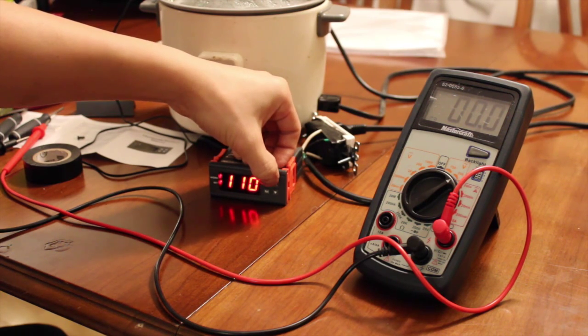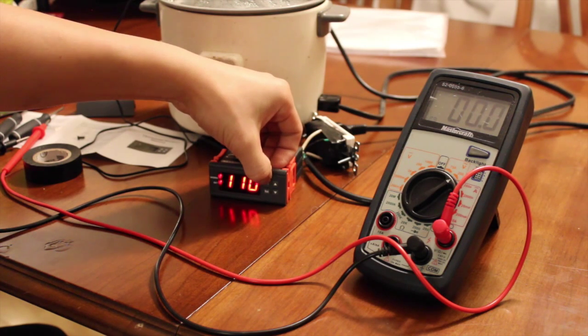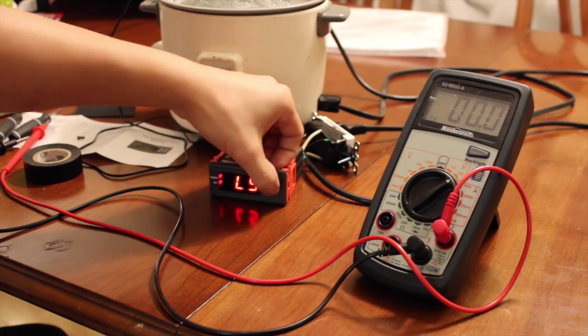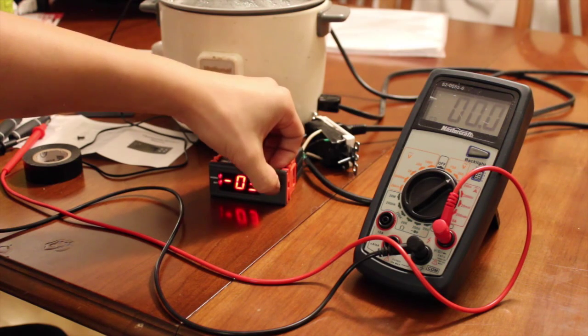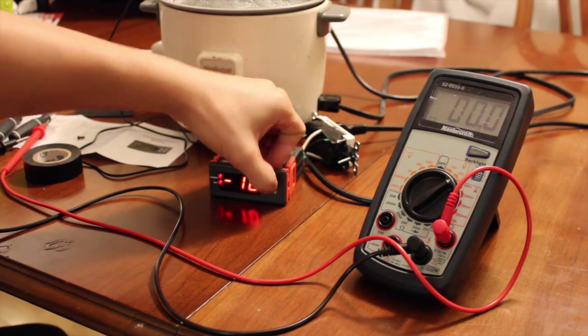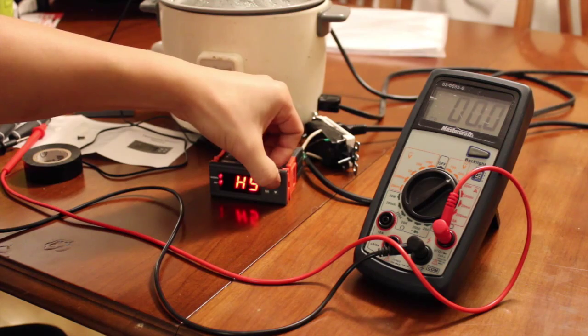HS is a high limit, so we don't care about these. Low LS is low limit, we can set it to minus 10 so that the whole range is used.